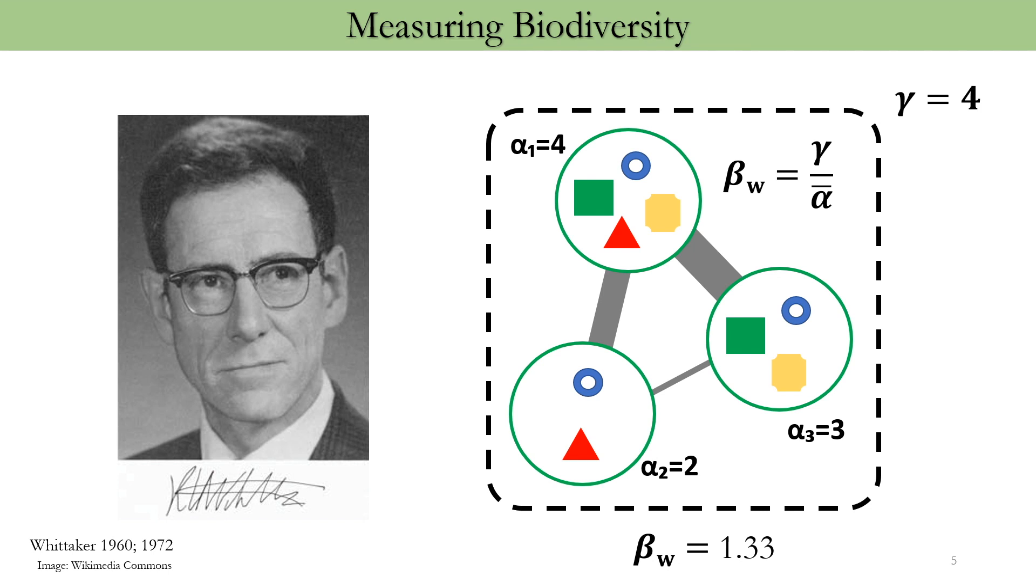And we can calculate beta as gamma divided by mean alpha, which works out to 1.33. And hence, as per the definition of Whittaker's beta, it means that the value of beta 1.33 is that value by which the alpha of this region is greater than the mean alpha of the region. But this was the example of what Whittaker's beta means.